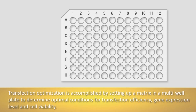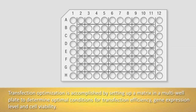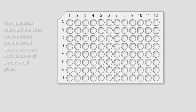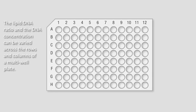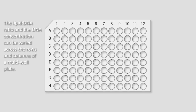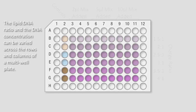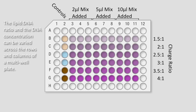Transfection optimization is accomplished by setting up a matrix in a multi-well plate to determine the conditions that result in the best transfection efficiency, gene expression levels, and highest cell viability. The lipid-to-DNA ratio and DNA concentration can be varied across the rows and columns of a multi-well plate.